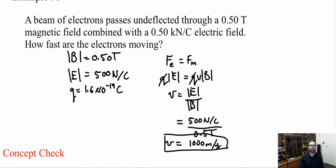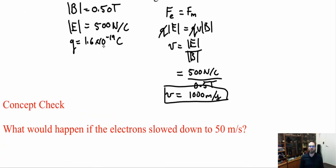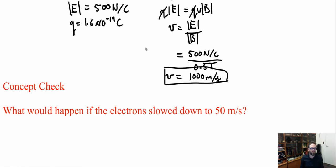Now, what would happen if the electron slowed down to 50 meters per second? If it slows down, the electric force would be greater than the magnetic force, causing the electron to deflect in the electric force's direction — because velocity only affects the magnetic force. Decreasing the velocity decreases the magnetic force, making it less than the electrostatic force.